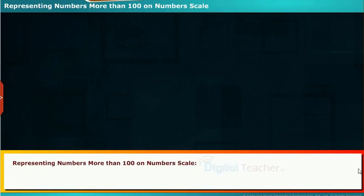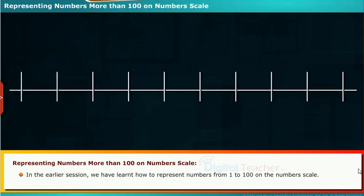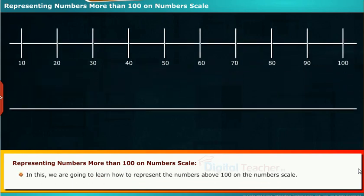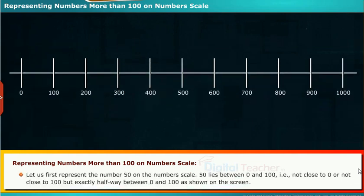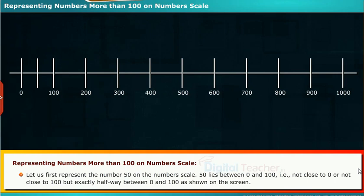Let us see the explanation of knowing numbers more than 100. In the earlier session we learned how to represent numbers from 1 to 100 on the number scale. Now we are going to learn how to represent numbers above 100 on the number scale. For example, the number 50 lies between 0 and 100 — not close to 0 or 100, but exactly halfway between them.